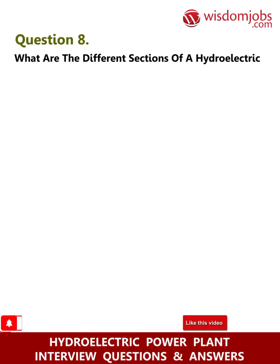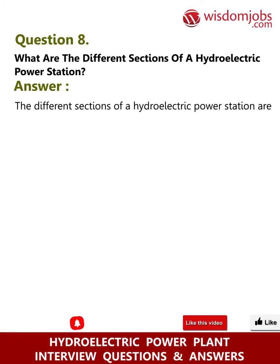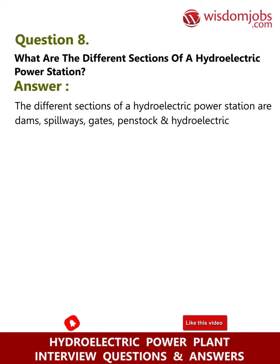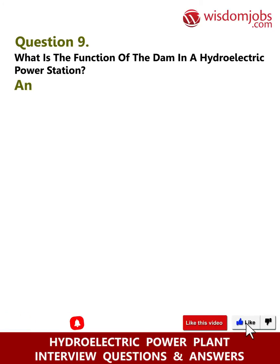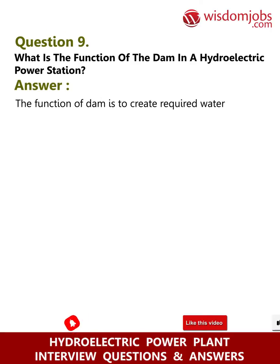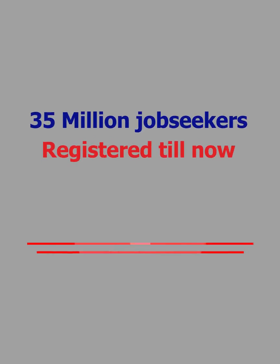Question 8: What are the different sections of a hydroelectric power station? Answer: The different sections of a hydroelectric power station are dams, spillways, gates, penstocks, and hydroelectric generators. Question 9: What is the function of the dam in a hydroelectric power station? Answer: The function of the dam is to create the required water head and store water in the catchment area.